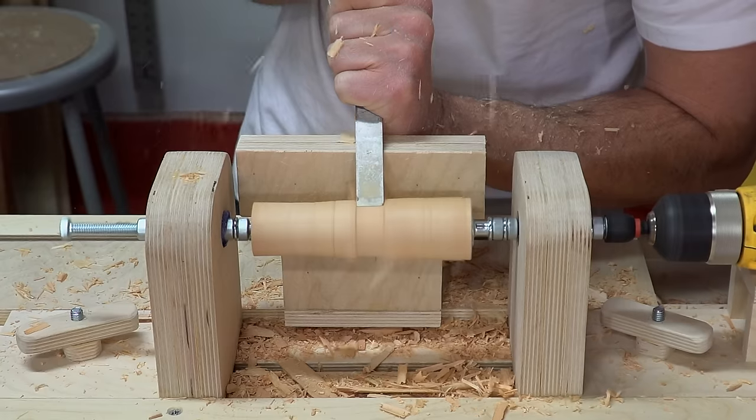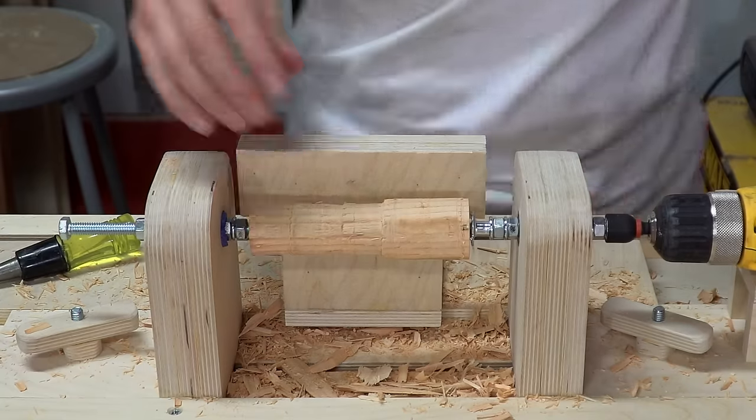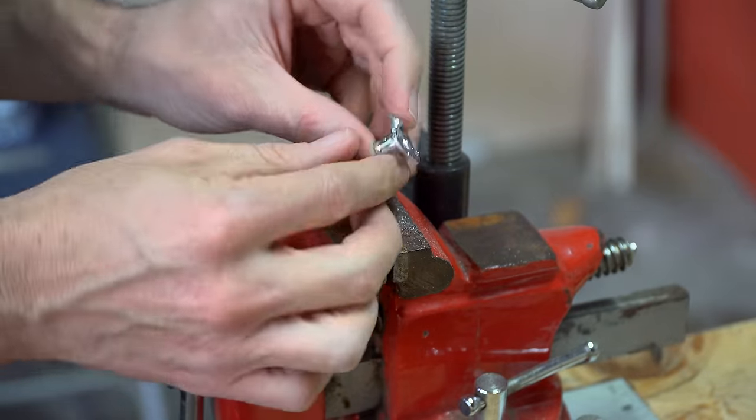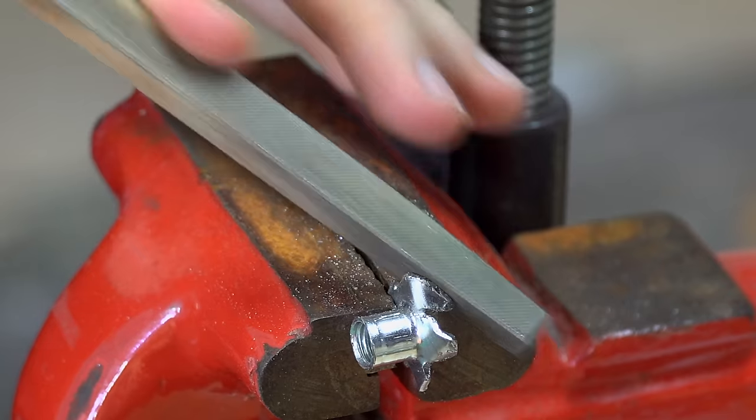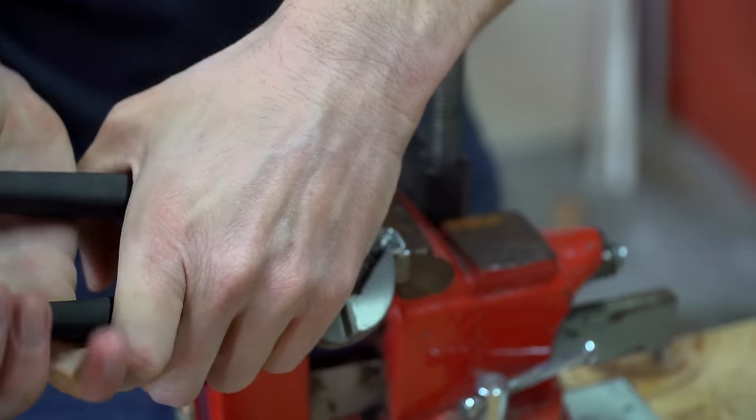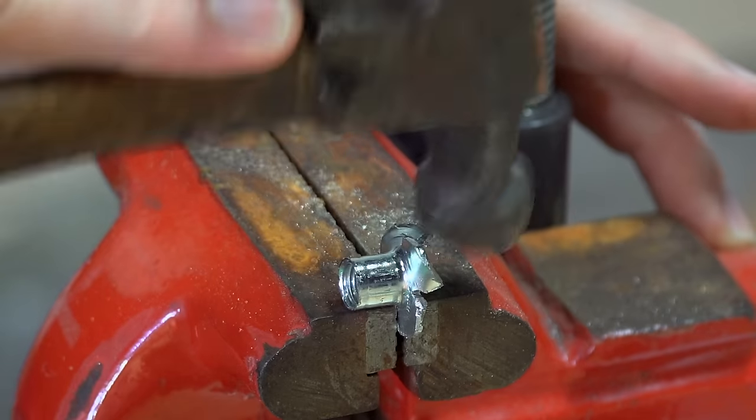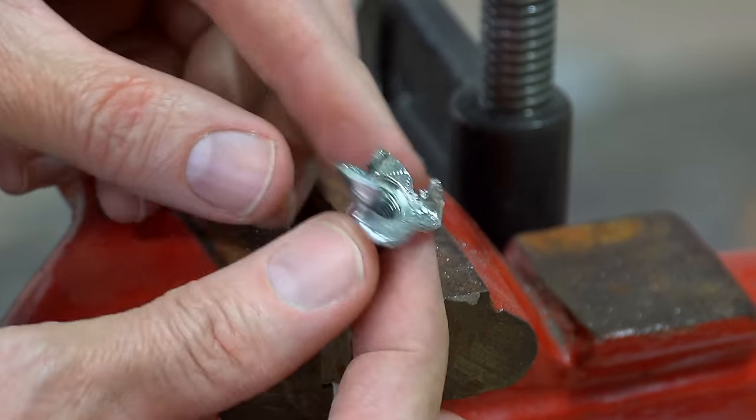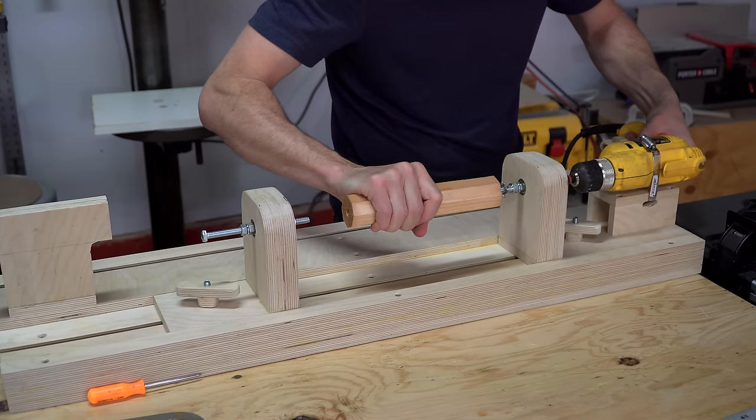It might be the chisel, it might be my technique, or maybe a little bit of both. Another problem I was having was that the original spikes on the T-nut had actually broken off, and so it wasn't always turning the piece, sometimes it would get hung up. So I created new spikes on the T-nut that were more robust than the original ones, and ever since I created these, it now grips the piece really well and turns it much better.